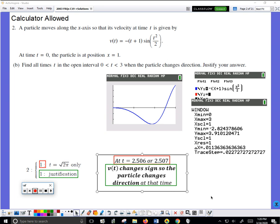This is part B of the same FRQ, so the same information about the particle moving. This one says: find all times during the time interval between 0 and 3 seconds that the particle changes direction.